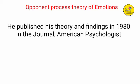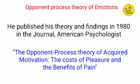He published his theory and findings in 1980 in the Journal of American Psychologists: the opponent process theory of acquired motivation — the cost of pleasure and the benefits of pain.